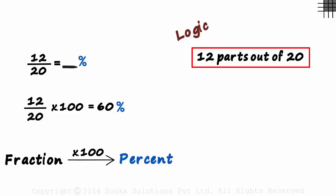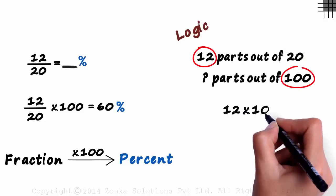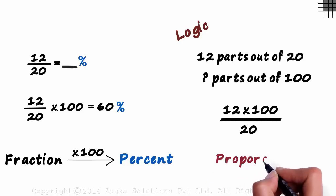Look at this example. There are 12 parts out of 20. By asking us to find the percent, we are actually asked how many parts out of 100? It will be this multiplied by this over this. 12 times 100 over 20. It's a simple case of proportion. Does this always work?